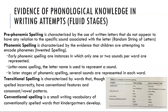Evidence of phonological knowledge in writing attempts — and these are all fluid stages, meaning children enter them sometimes more rapidly than others or stay in a particular stage longer. Pre-phonemic spelling is characterized by written letters that don't appear to have any relation to the sound associated with the letter — a random string of letters with no sound association. Phonemic spelling is characterized by children attempting to encode phonemes into their writing, which can be termed invented spelling. Early phonemic spelling includes instances where only one or two sounds per word are represented.